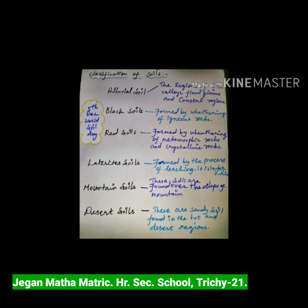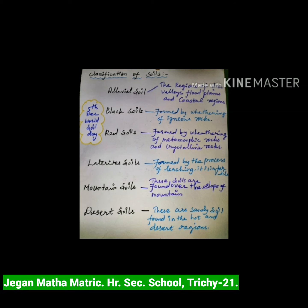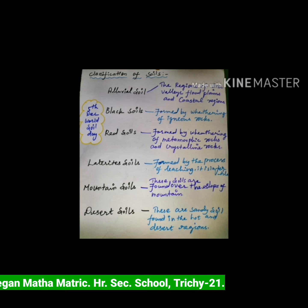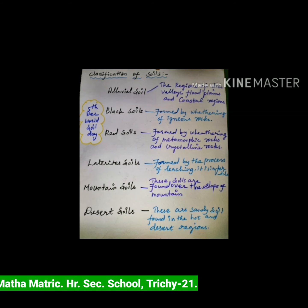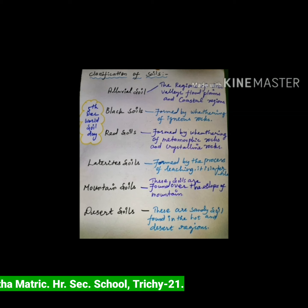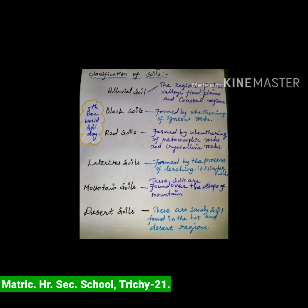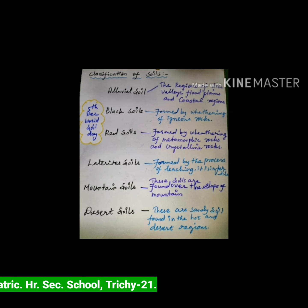Mountain soil: these soils are found over the slopes of mountains. The soil in these regions is thin and acidic. Desert soil: these soils are sandy soils found in arid desert regions. This soil is porous and saline.